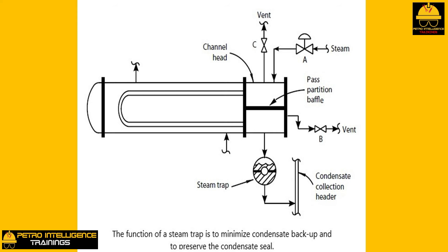First, steam traps are mechanically unreliable. Second, as the valve closes, the pressure in the lower half of the channel head may briefly fall below the frequently unstable pressure in the condensate collection header pipe. When this happens, water in the condensate header could flow backwards into the channel head of the reboiler and rapidly submerge many of the tubes. We would ignore this problem if the steam pressure is 100 psig or more and the condensate collection header is 30 psig or less. For smaller steam flows — 5,000 to 10,000 BTU per hour — we would use a steam trap.